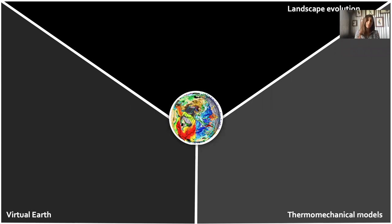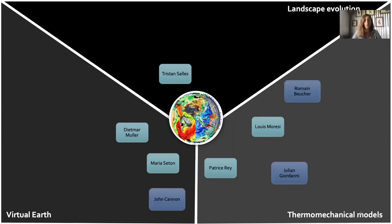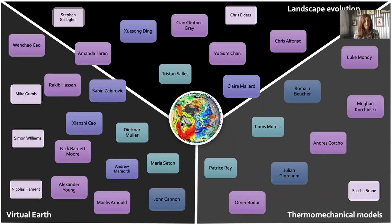We have the landscape evolution part, the virtual planet part, and the thermomechanical model part. We have different permanent researchers working there: Tristan and Sal with Badlands, Dietmar and Maria with G-Plates, Patrice and Louis with Underworld. Then we have more technician or developer staff with Roman, Julian, and Ja. We also have a lot of postdocs, even more PhD students, and also external researchers.